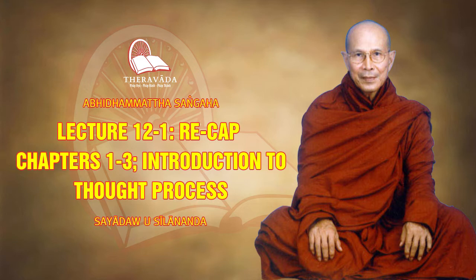The other three ultimate truths are mental factors, matter, and nibbana. Citta, or consciousness, is divided into 89 or 121 types. There are akusala cittas, ahetuka cittas, and so on.